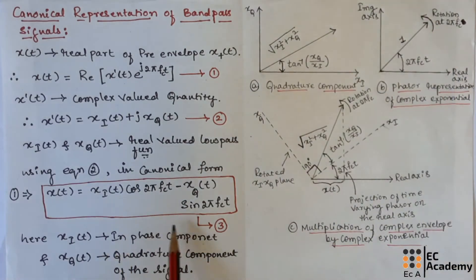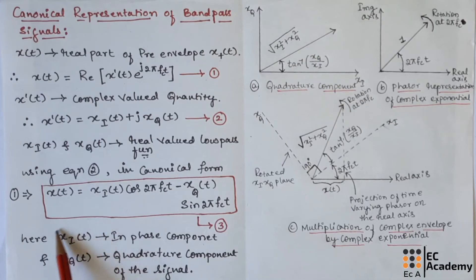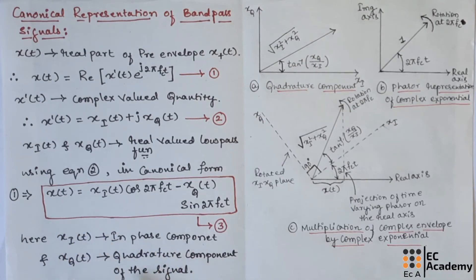In equation number 3, xI(t) is the in-phase component and xQ(t) is the quadrature component of the signal. We call xI(t) the in-phase component of the signal, and xQ(t) is known as the quadrature component of the signal.